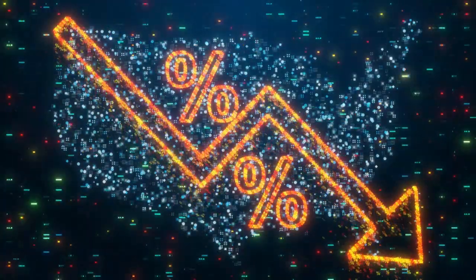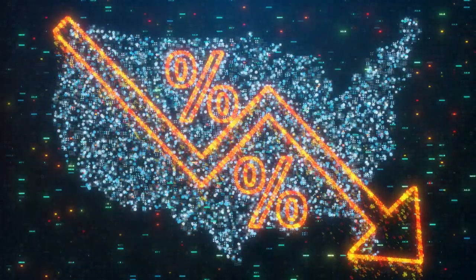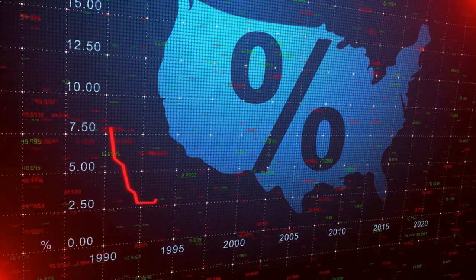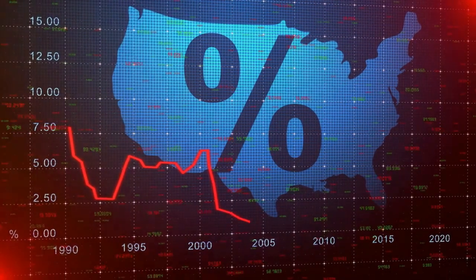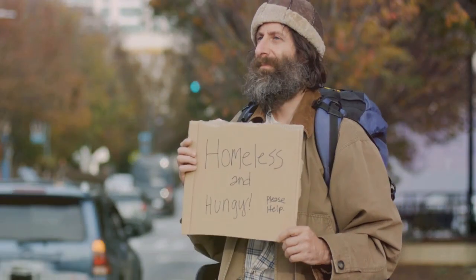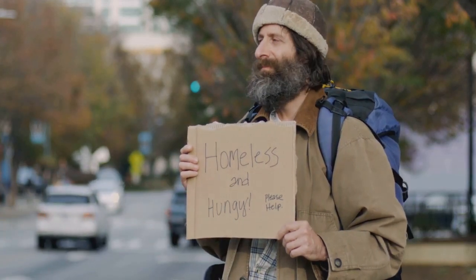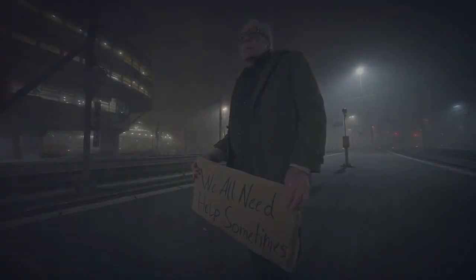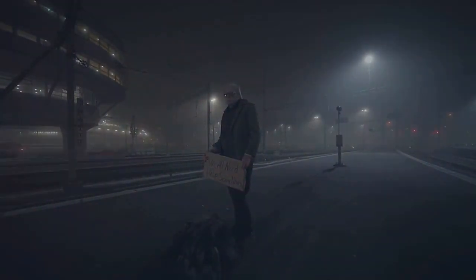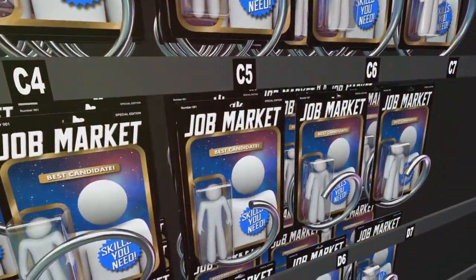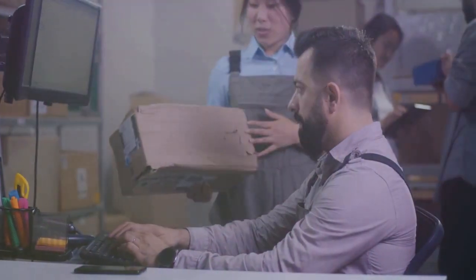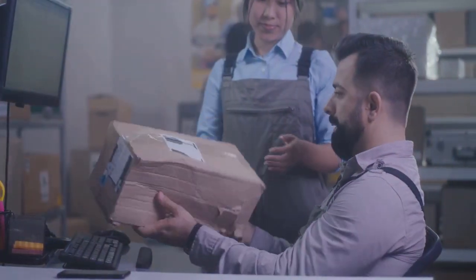This slowdown in global demand could spill over into the U.S. economy, potentially offsetting some of the stimulative effects of the Fed's rate cut. If American companies face reduced demand abroad, they may cut back on production and investment, leading to job losses and slower domestic growth. On the domestic front, the U.S. economy also faces rising income inequality. Despite overall economic growth, the benefits have not been evenly distributed, and wage growth has been sluggish for many workers.